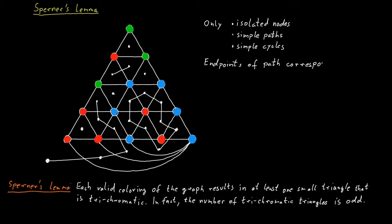The trichromatic triangles are exactly those triangles that correspond to an endpoint of one of these paths. And since endpoints of paths always occur in pairs, we must have an even number of such endpoints.